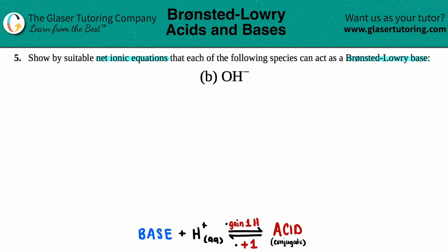Remember, Bronsted and Lowry were two scientists that came up with the idea of acids and bases independently — they had no idea of one another, but roughly around the same time they came up with the same idea. Pretty crazy, right? What they found out was that bases accept hydronium ions, which is H+. Bronsted-Lowry acids will always donate the hydrogens; the bases accept.